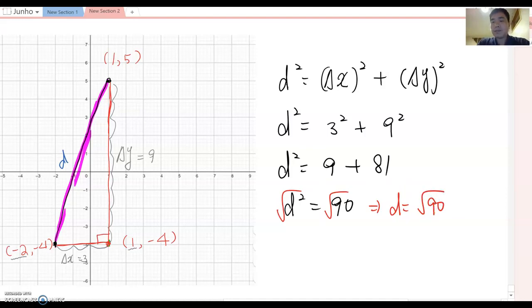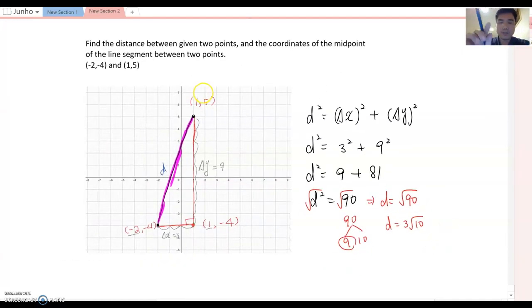Let's simplify using prime factorization. Then as you see, 90 = 9 × 10. We know √9 = 3. Therefore, d becomes 3√10 here. So we found the first answer. The distance between these two points will be 3√10 here.